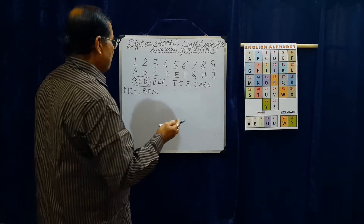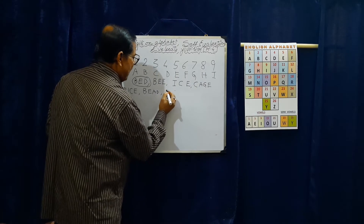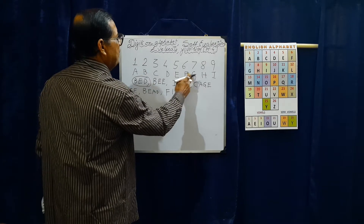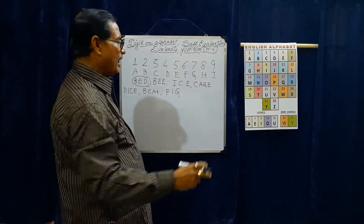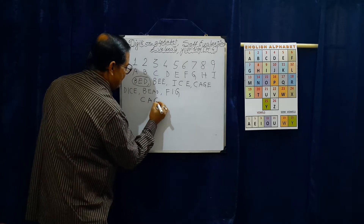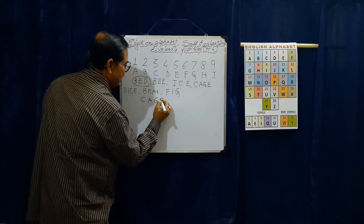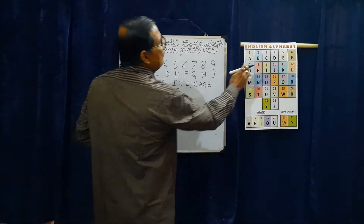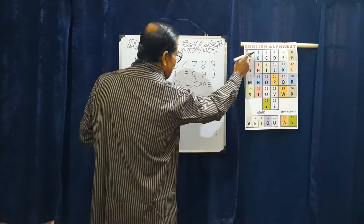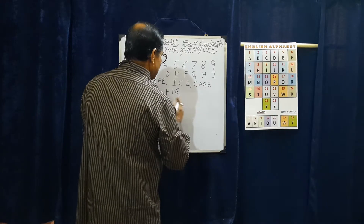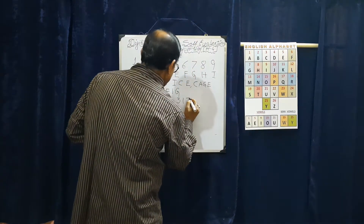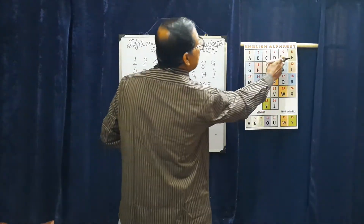We can also make the word FIG — F, I, G. Now let me take another word: CAGE — C, A, G, E. C denotes 3, A denotes 1, G denotes 7, and E denotes 5.